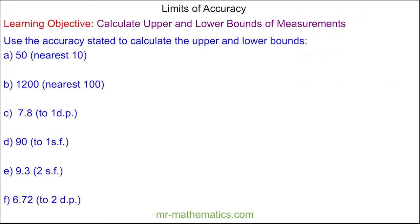Welcome to our lesson on Limits of Accuracy. A number has been rounded to the nearest 10 as 50, and we're going to look at the range of values that this could be.